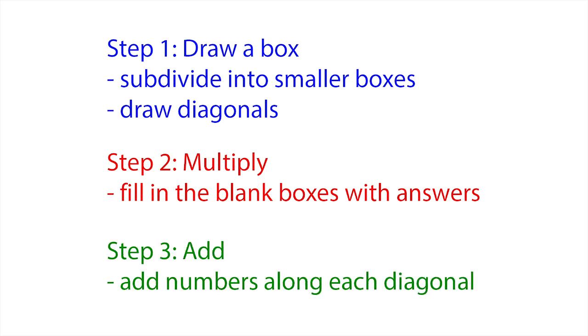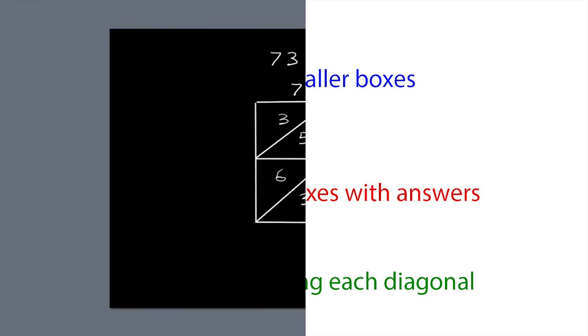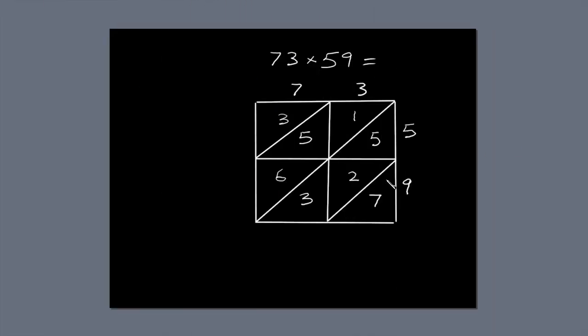Finally, we're going to add up the numbers along the diagonals. I'll circle each diagonal and show you what I mean. The first diagonal only has one number, 7. So write 7 directly below the diagonal.